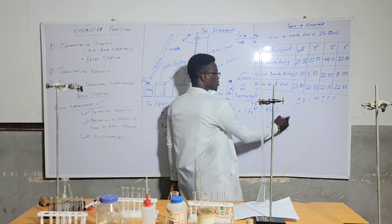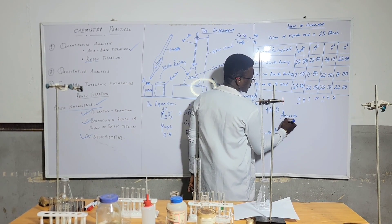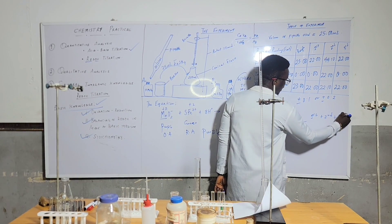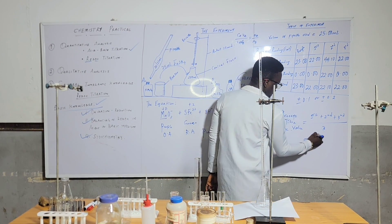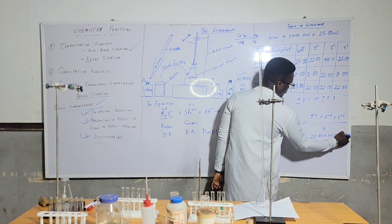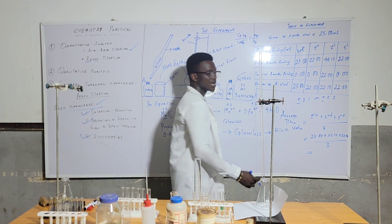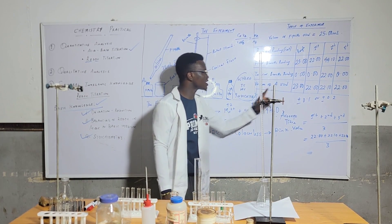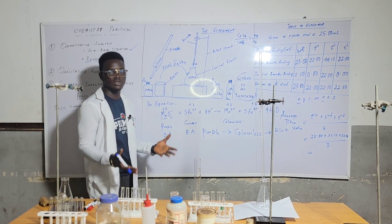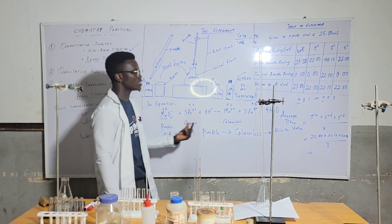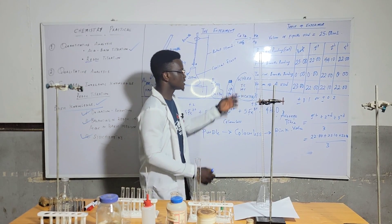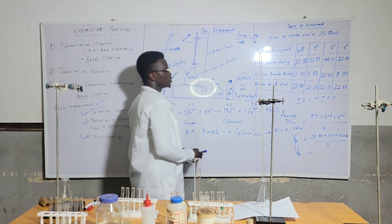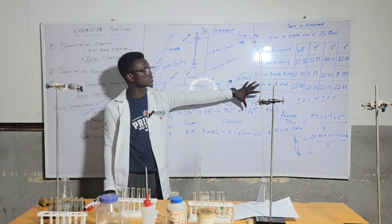After recording your table, calculate your average titre value: (first titre + second titre + third titre) ÷ 3. For example, (22.00 + 22.10 + 22.00) ÷ 3. Use your calculator to get that. Note that 'A' here refers to KMnO4 — but be careful, whatever your question describes is what you should use. The volume of A used equals your average titre value. That is how you carry out your experiment.